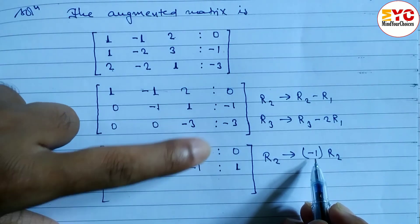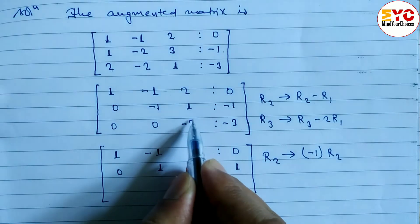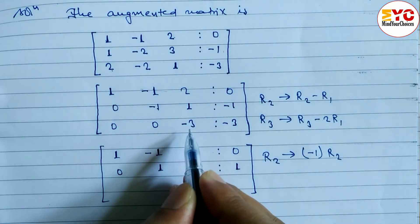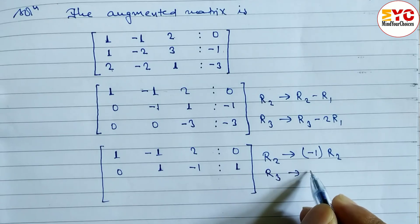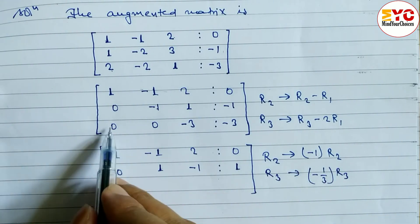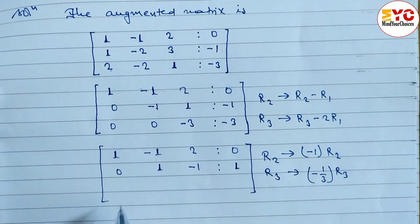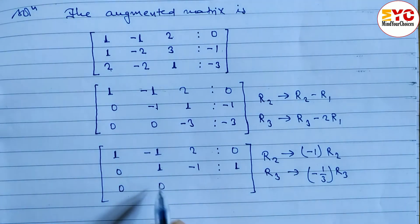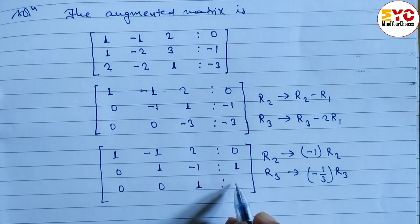Now for row 3, the pivot is -3. We apply R3 → (-1/3) × R3 to get a leading 1. Dividing each entry by -3: 0/(-3)=0, 0/(-3)=0, -3/(-3)=1, and -3/(-3)=1. The new third row is 0, 0, 1, 1.